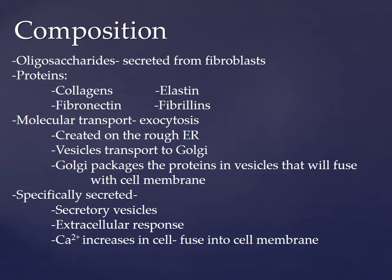The extracellular matrix is composed of oligosaccharides — saccharide polymers with simple sugars covalently attached. They are secreted from the fibroblasts of the cells, so the cells actually create the extracellular matrix surrounding them. The ECM secreted proteins include collagens, fibronectin, elastin, and fibrilins. The molecular transport of these molecules is referred to as exocytosis, and they are actually secreted out of the cell.